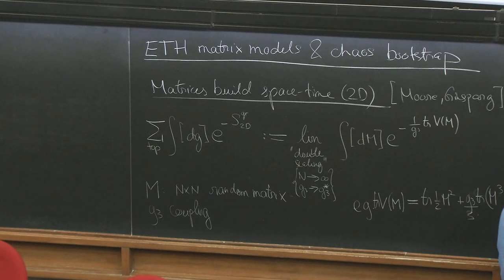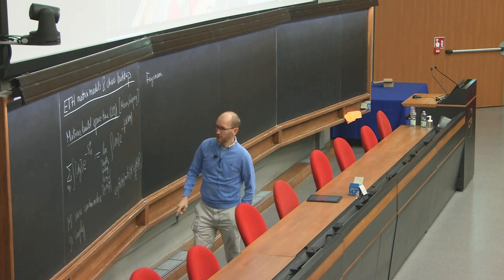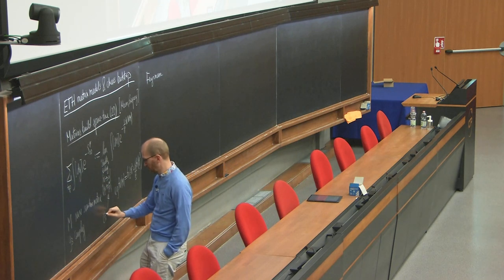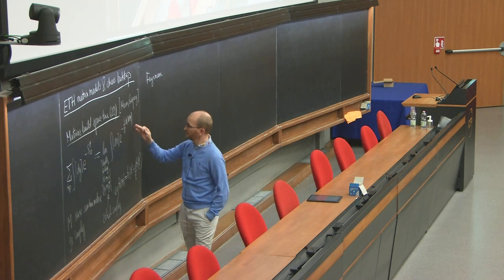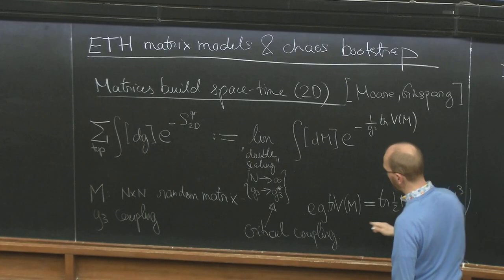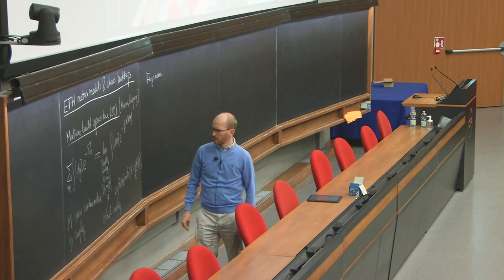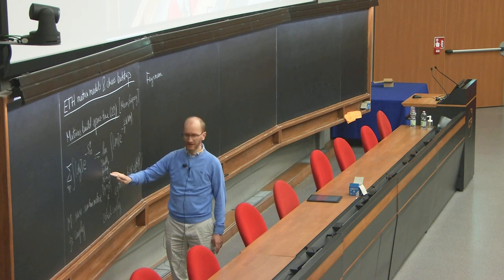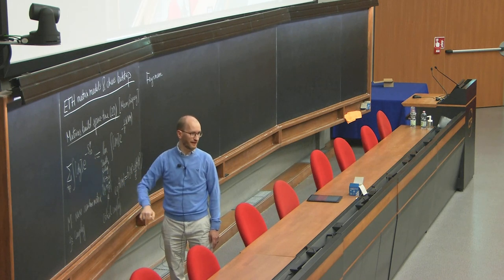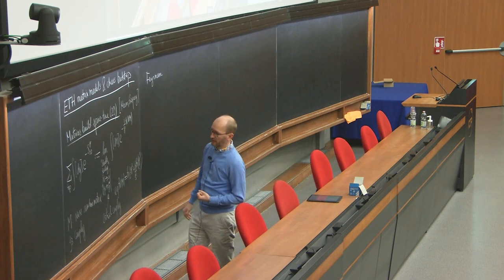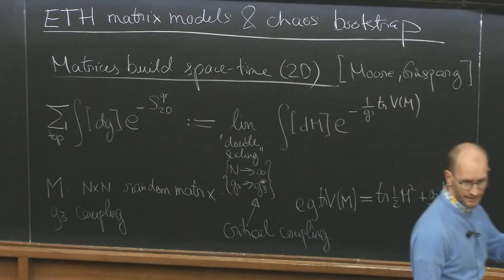The idea is to start by looking at Feynman diagrams of such models. G3-star is a particular value of the coupling which tunes the model to a critical point. You take the number N to infinity and the coupling constant to a critical value in a coordinated way, such that a certain ratio of a combination of these quantities remains finite — this is why they call it double scaling.